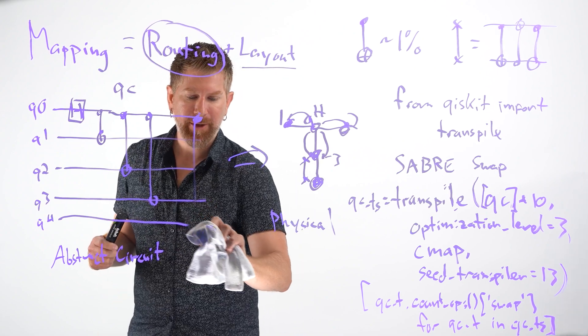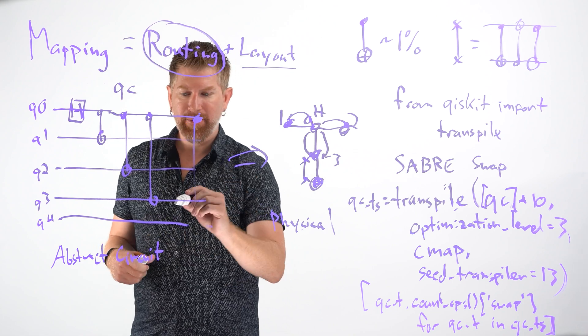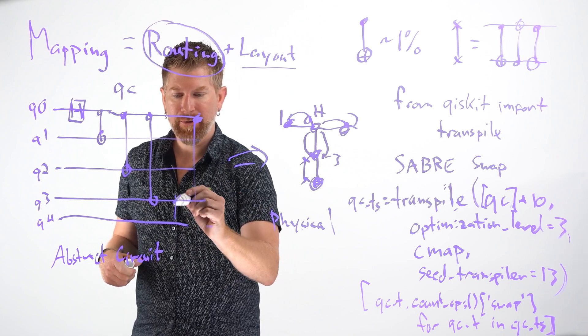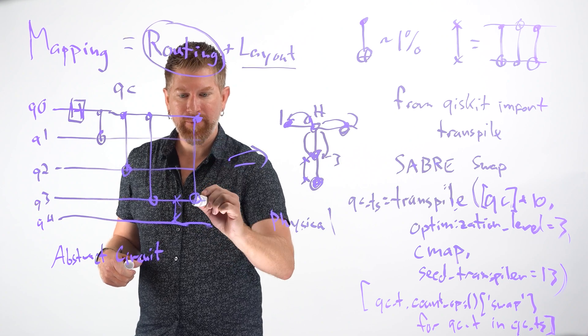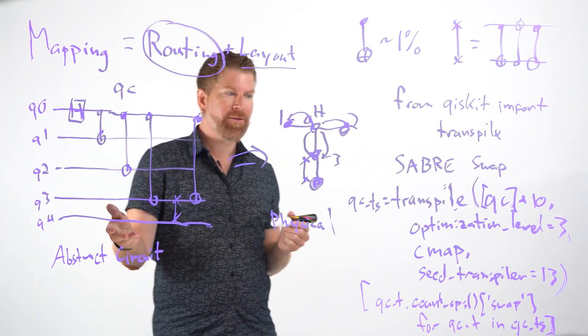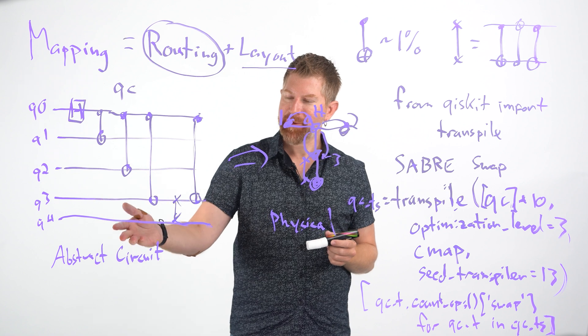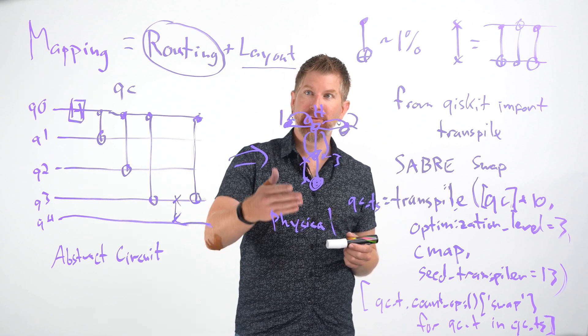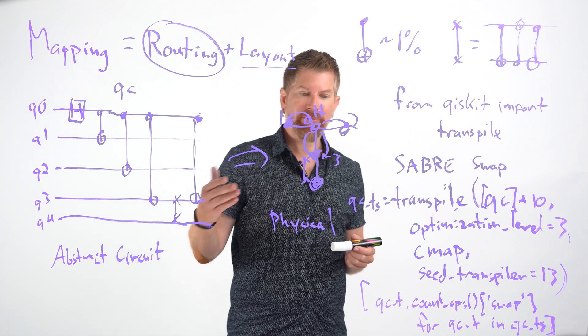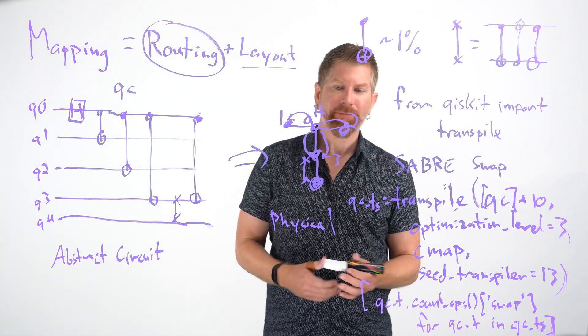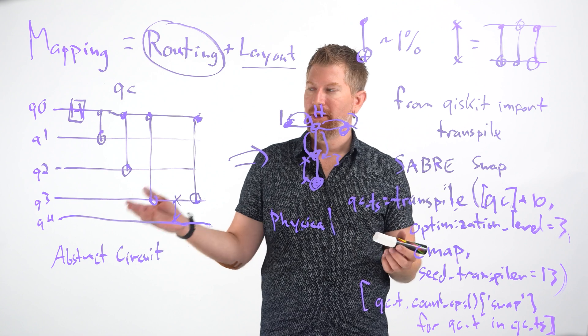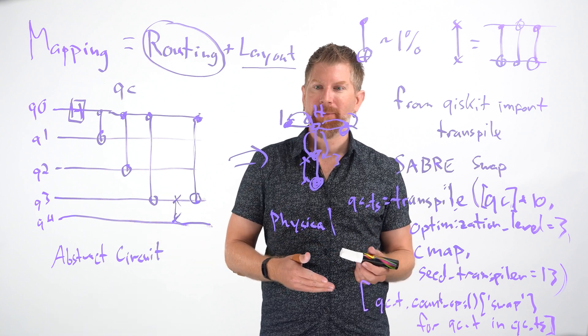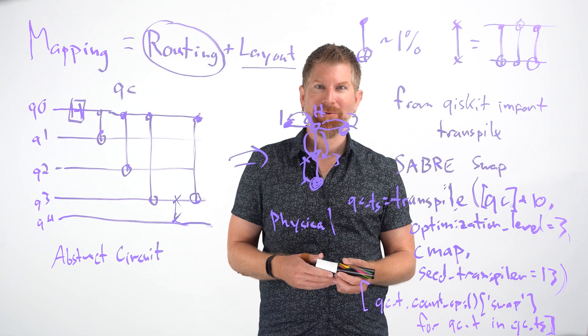So we insert the swap here. And now we do a CNOT there. So this is our transpiled circuit now that is the most efficient mapping of this algorithmic circuit to the actual physical layout. So in this video, we've talked about routing, which is how we map an abstract circuit most efficiently to a topology. I've been your host, Nick Braun. Thanks for watching.